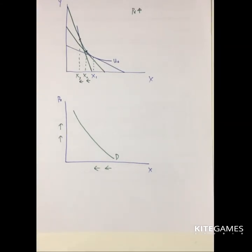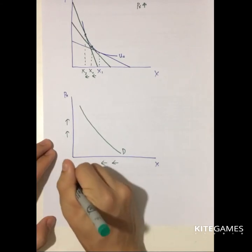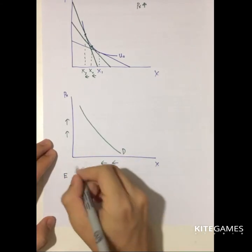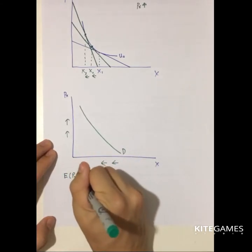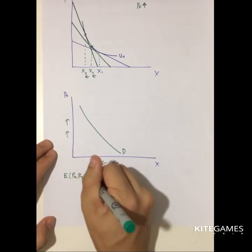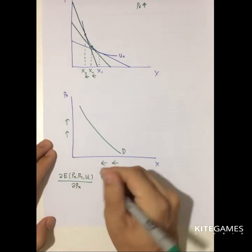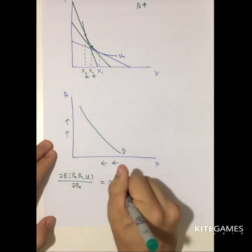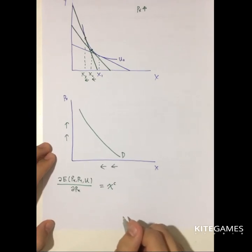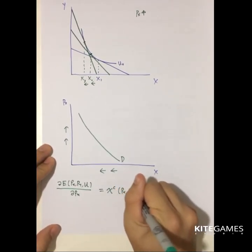How do we calculate the Hicksian demand function mathematically? To calculate the Hicksian demand function, you start from the expenditure function, which is a function of Px, Py, and U in the two-good case. Then taking the partial derivative of E with respect to Px gives you the compensated demand curve — that is, the Hicksian demand curve — which is a function of Px, Py, and U.